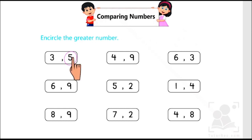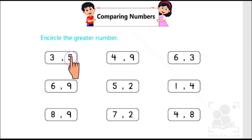The logical concept of finding the greater number is: the number that comes later is greater. As three comes before five, we can say five comes later than three, therefore five is the greater number. Let's start with the rest of the activity.